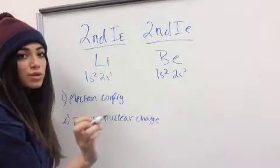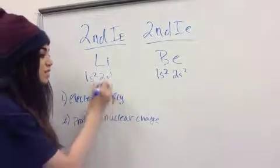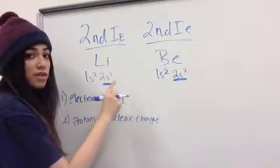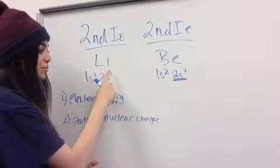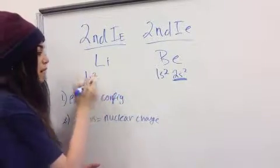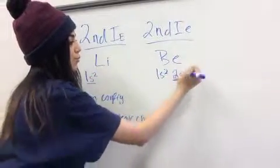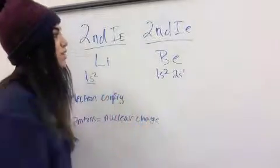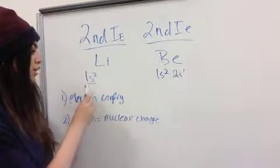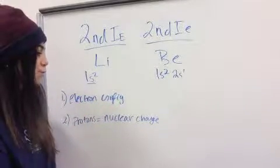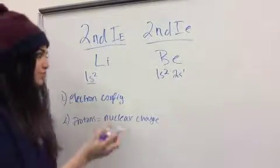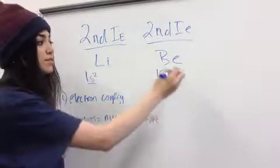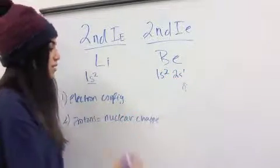Since we're looking at the second ionization energy, we already removed one electron for the first. So lithium, after losing one electron, is now in the 1s² shell, and beryllium, after losing one electron, is now in the 2s¹ shell. So we're comparing lithium's 1s² inner core shell to beryllium's 2s¹ outer shell.